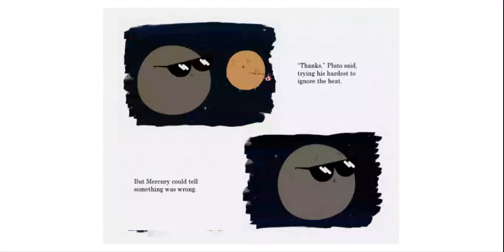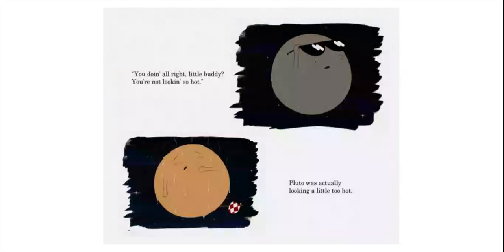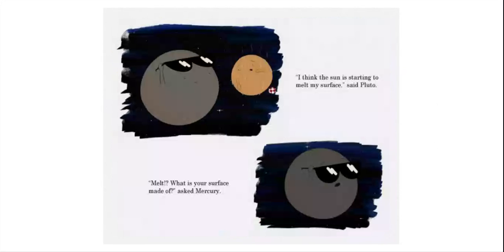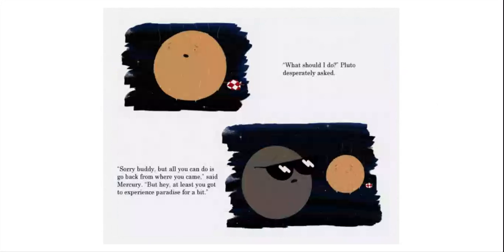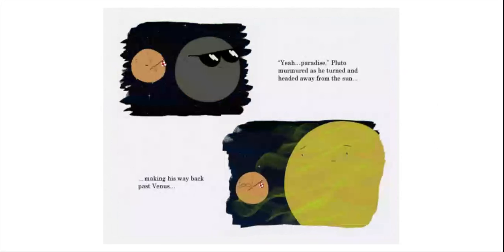Thanks, Pluto said, trying his hardest to ignore the heat. But Mercury could tell something was wrong. You doing all right, little buddy? You're not looking so hot. Pluto was actually looking a little too hot. I think the sun is starting to melt my surface, said Pluto. Melt? What is your surface made of, asked Mercury. Let's see, said Pluto. My core is made of rock and metal, but the rest of me is mostly ice. Well, there's your problem, my friend. The sun's going to melt all your ice away at this distance, replied Mercury. Soon you'll be cooked to nothing but a rocky core. What should I do, Pluto desperately asked. Sorry, buddy, but all you can do is go back from where you came from, said Mercury. But hey, at least you got to experience paradise for a bit. Yeah, paradise, Pluto murmured as he turned and headed away from the sun.